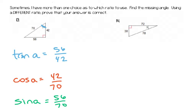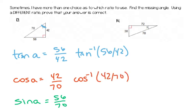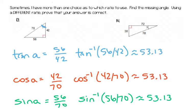When you do this on the first one, you would type in your calculator tangent negative 1, 56 over 42. For the second one, you would type in cosine negative 1, so second cosine, and then 42 over 70. And for the third one, you would type in sine negative 1, 56 over 70. I want you to try all three of those on your calculator. For all three of them, you should get the same answer. Go ahead and pause the video and try all three.